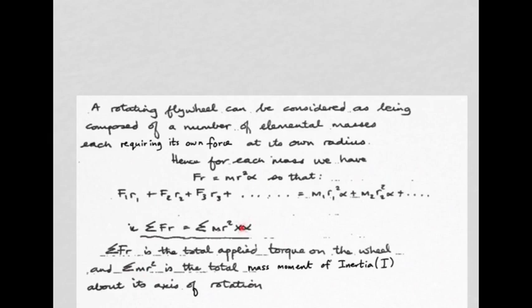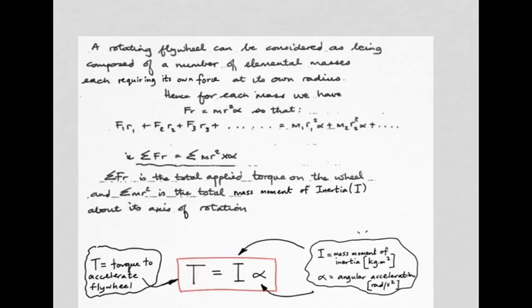The sum of all the F·r terms is the total applied torque on the wheel, and the sum of all the mr² terms is the total mass moment of inertia of the flywheel about its axis of rotation. Alpha remains outside, suggesting torque equals I times alpha. In the formula T = Iα: T is torque, I is the mass moment of inertia in kilogram meters squared, and alpha is angular acceleration in radians per second squared.